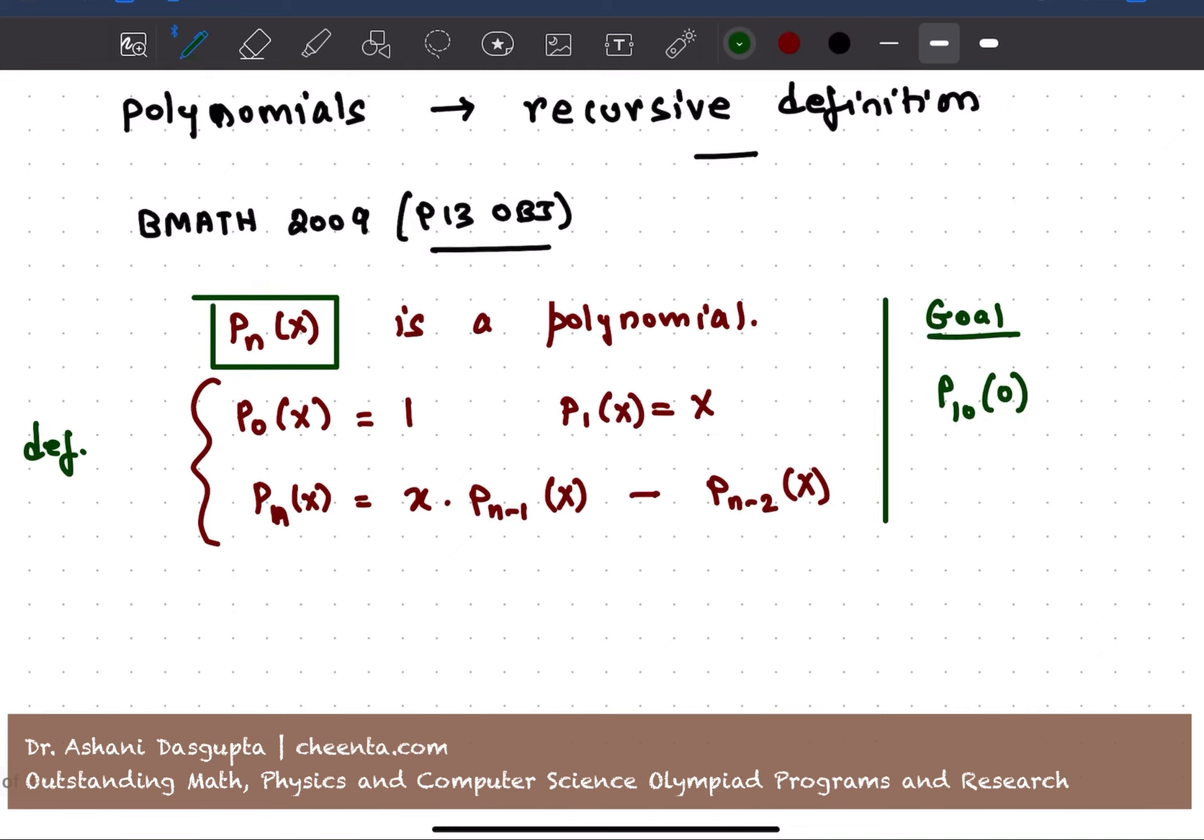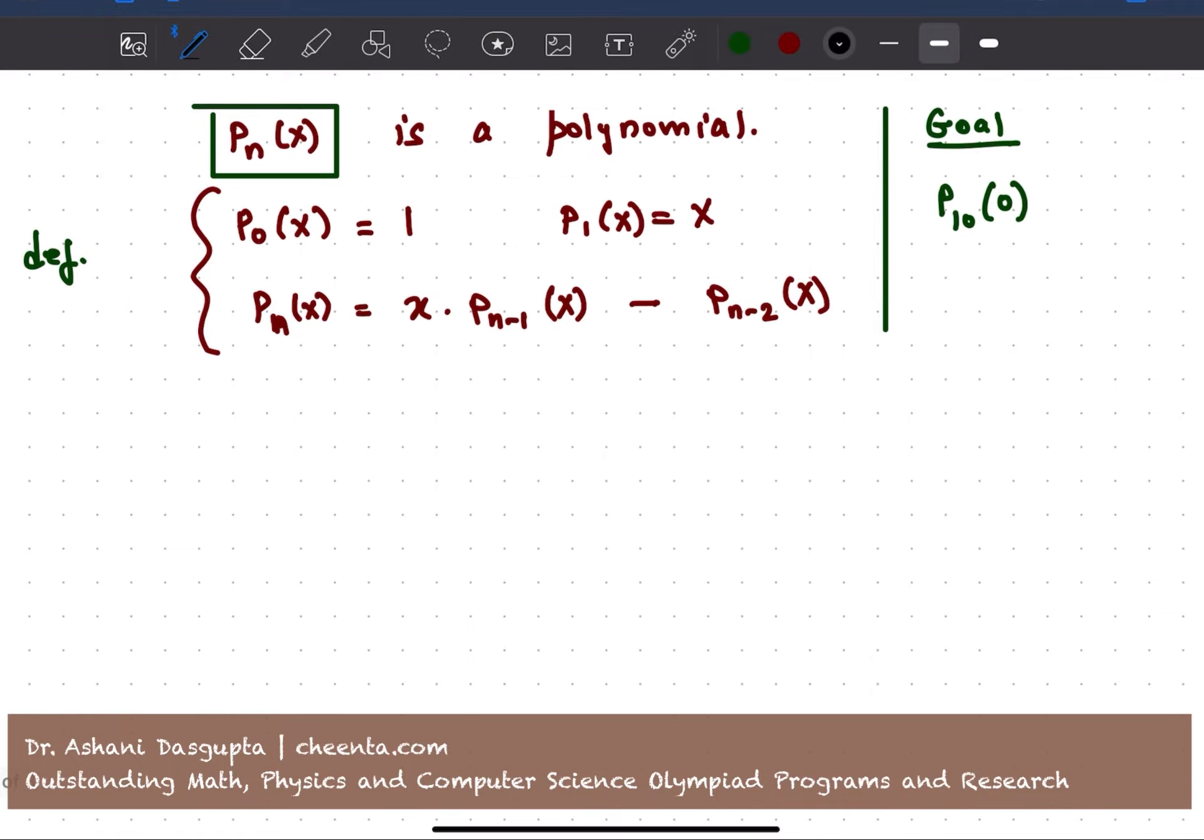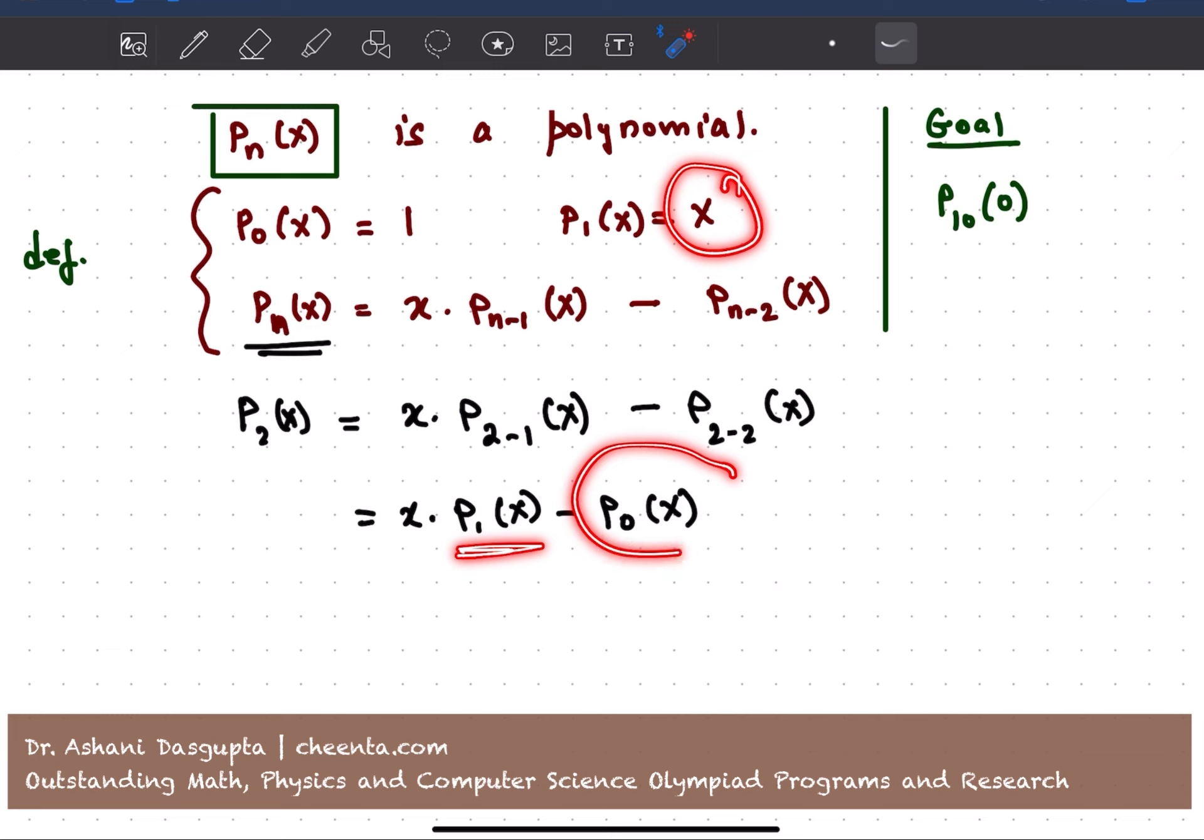So just to play with it a little bit, let me give you P_2(x). Let's see how that works. So P_2(x), we will use this definition. P_2(x) is x times P_{2-1}(x) minus P_{2-2}(x). So that means this is equal to x times P_1(x) minus P_0(x). But we already know that P_1(x) is x and P_0(x) is 1. So we get x times x minus 1, which is x squared minus 1. That is what P_2(x) is.